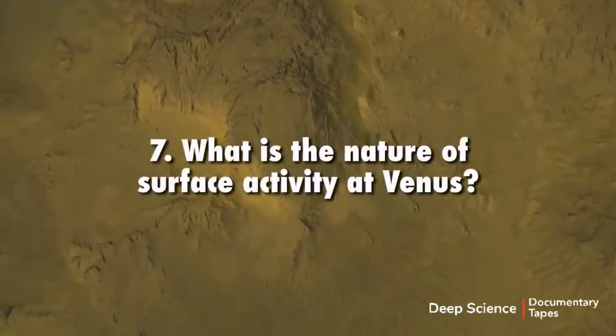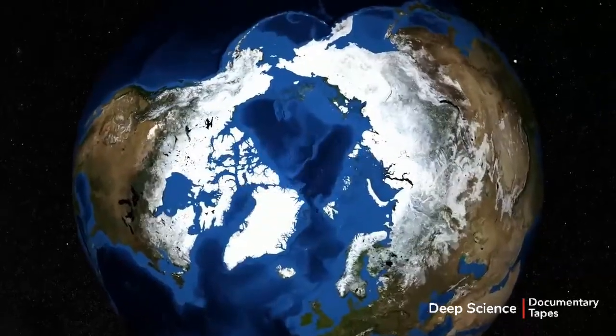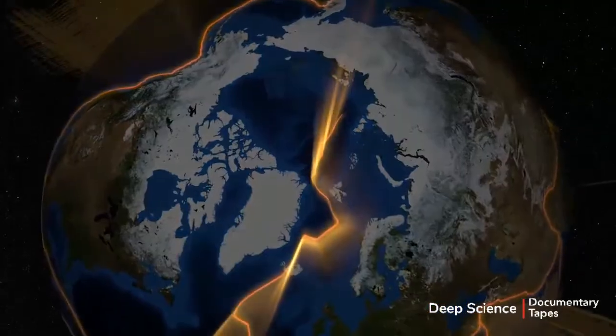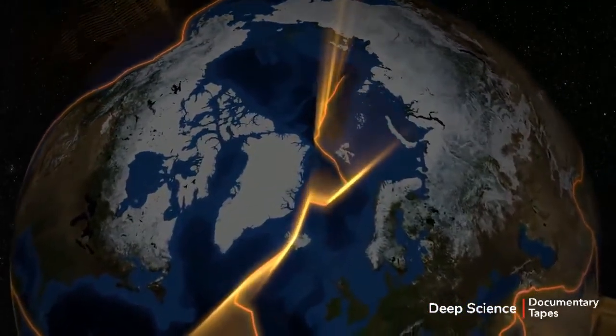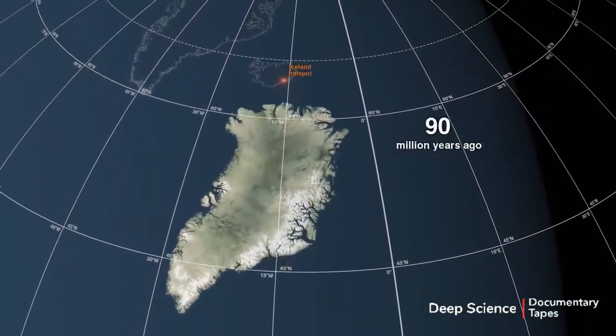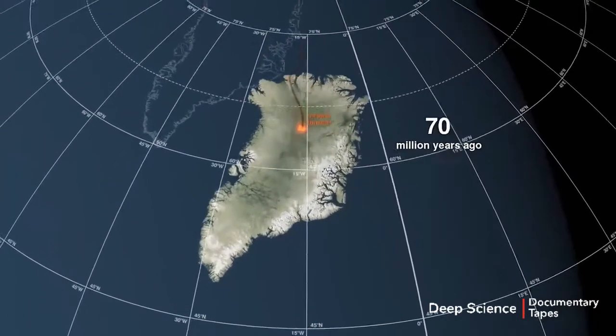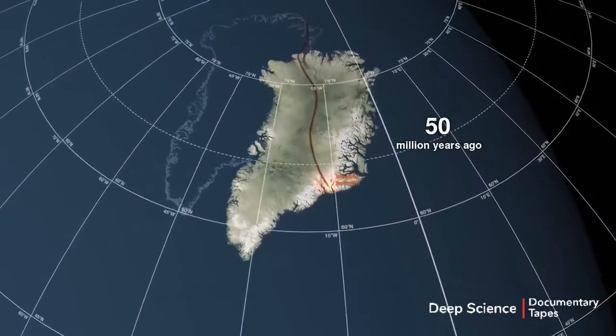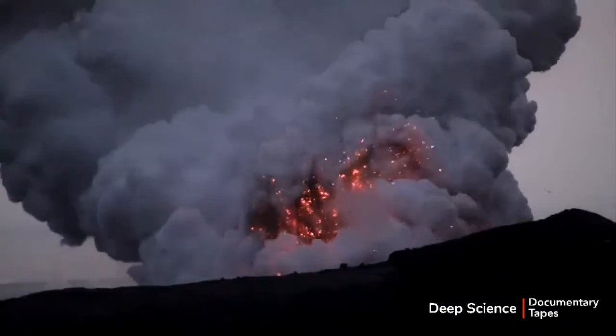What is the nature of surface activity at Venus? Earth's crust hosts a network of relatively thin plates jostling around on the planet's surface in constant horizontal motion. If similar plate tectonics exist on Venus, the planet's crust must experience continental drift, like Earth. Another key mystery about the surface of Venus is volcanism.